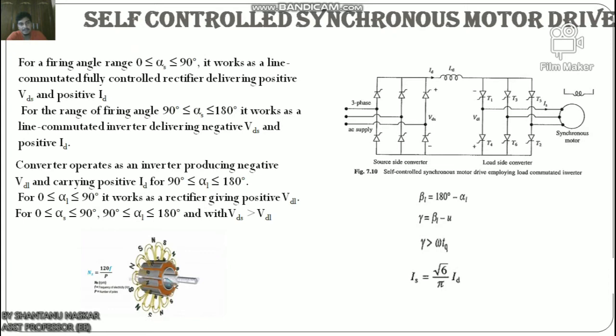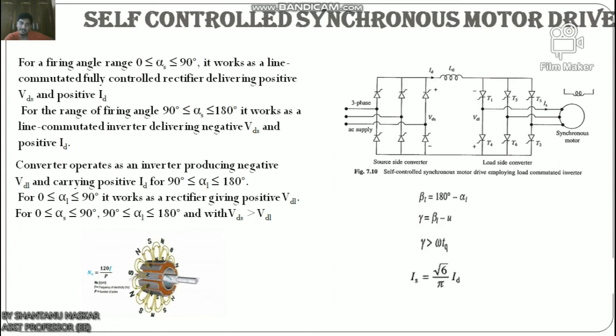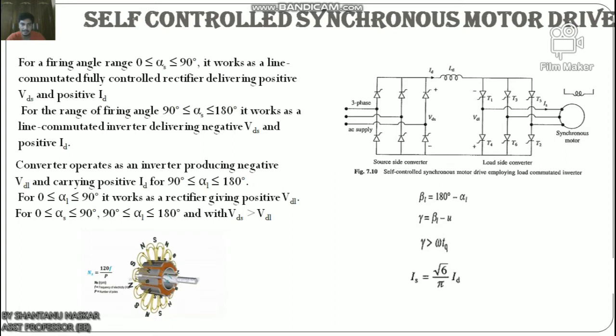The DC link inductor Ld reduces the ripple in the DC link current Id and prevents the two converters from interfering with each other. Because of the inductor in the DC link, the load-side converter working as an inverter behaves essentially as a current source inverter, except that thyristor commutation is performed by motor induced voltage. Consequently, the motor phase current has a six-step waveform. The AC input current of the source-side converter also has a six-step waveform. The DC link current Id flows through the machine phase for 120° in each half cycle, and the fundamental component of motor phase current is Is = (√6/π) × Id.